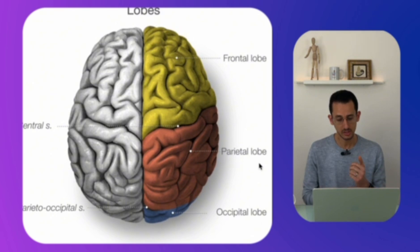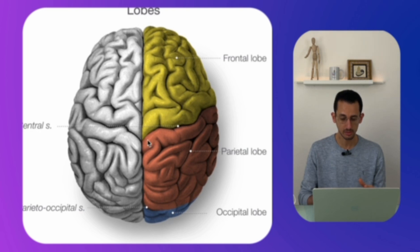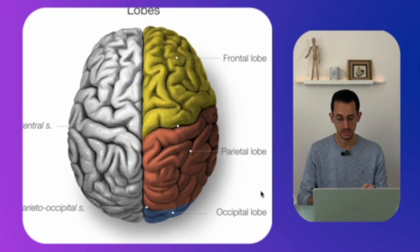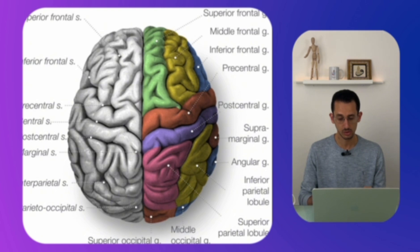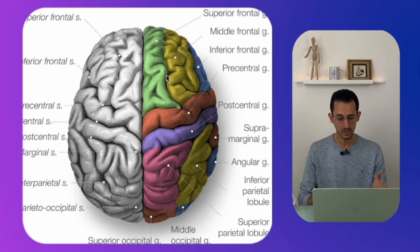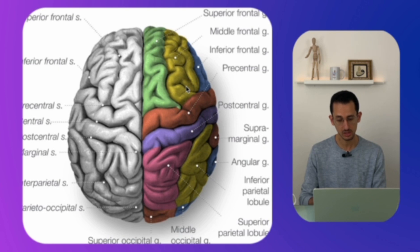Starting here — this is an image of the brain. You have the frontal lobe and the parietal lobe, which are separated by the central sulcus, and more posteriorly is the occipital lobe. We are subdividing each lobe into multiple gyri with sulci in between. In the frontal lobe, we have the superior frontal gyrus separated by the superior frontal sulcus, and then the inferior frontal sulcus separating the middle from the inferior frontal gyrus.